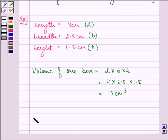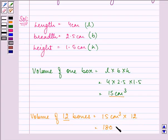Then we need to find the volume of 12 such boxes. That will be the volume of one box into 12, which equals 180 cm cubed.